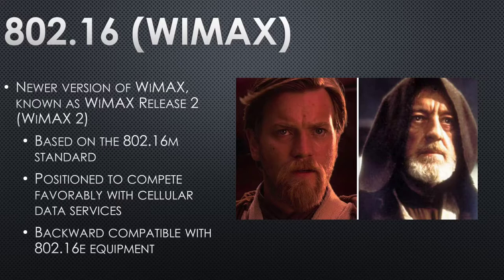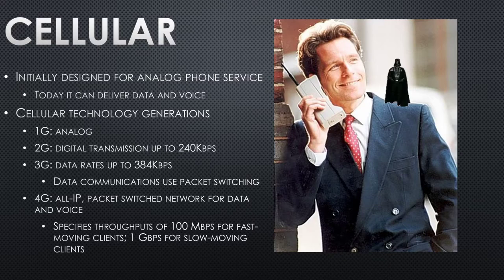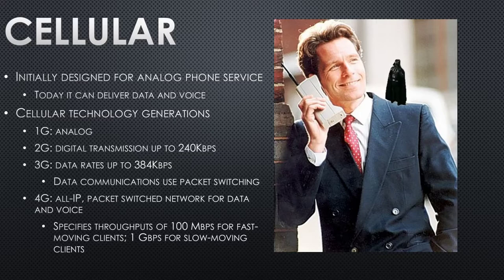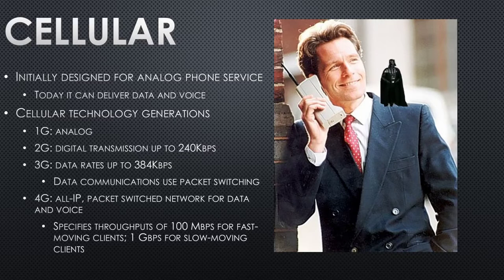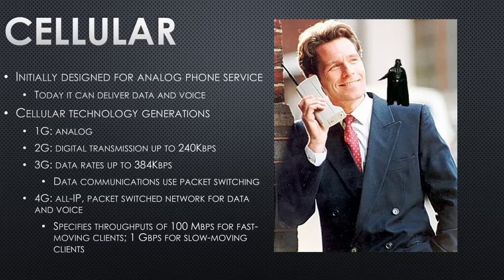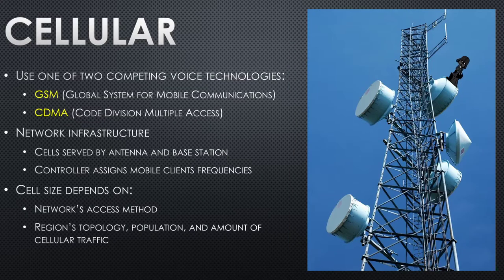Cellular was originally designed for voice — analog — but today it does data and voice. The history goes: 1G was gigantic 12-pound phones that could call from anywhere but couldn't send data. 2G gave us 240 kilobits — better than a modem. 3G brought 384 kilobits — still not great. 4G was a quantum leap. 5G is the next thing coming, but it's not built out everywhere — not available here yet, though I have a phone that supports it.